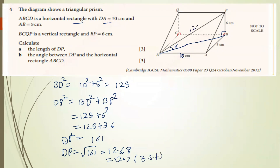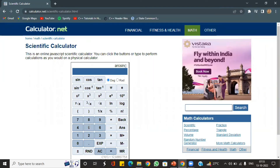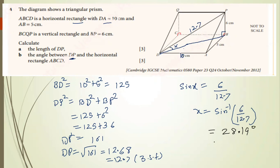Now use trigonometry to find angle x using opposite and hypotenuse (DP). sin x = 6/12.7, so x = sin⁻¹(6/12.7). Using the calculator, sin⁻¹(6/12.7) = 28.19 degrees, which to 3 significant figures is 28.2 degrees. This completes our trigonometry lesson, and we will be coming up with more on trigonometry.